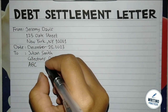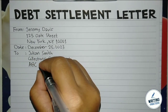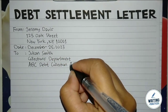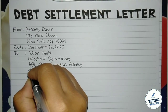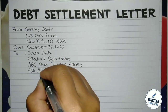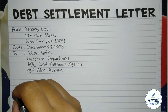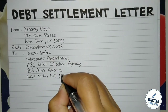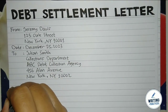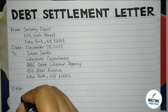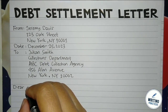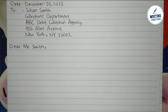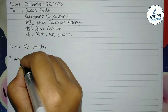In this example, the letter is addressed to the Collections Department at ABC Debt Collection Agency. After that, write the address of the company or office — don't forget to mention the number, street name, city, state, and zip code. After completing the header information, you can open the letter with a salutation: simply write 'Dear' followed by the recipient's name, or write 'Dear Sir/Madam' if you don't know their name.